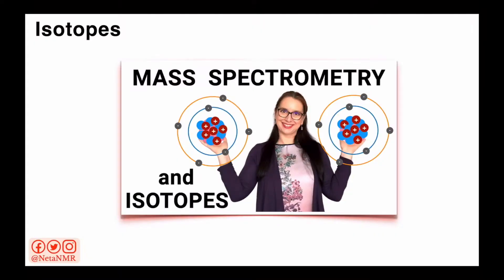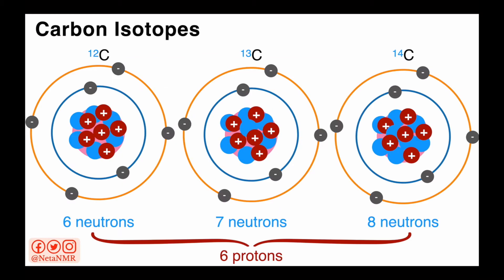First, let's see what exactly radiocarbon is. In a previous video, we talked about isotopes — what they are and how we can detect the different isotopes of elements using mass spectrometry. We've seen that isotopes are forms of elements that contain the same number of protons in the nucleus, but vary in their neutron numbers. You can see here 3 isotopes of carbon. Each isotope has 6 protons in the nucleus, but the number of neutrons can be 6 for carbon-12, 7 for carbon-13, and 8 for carbon-14.